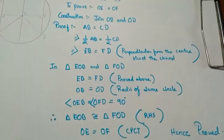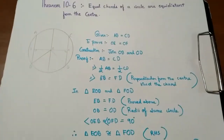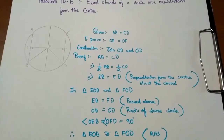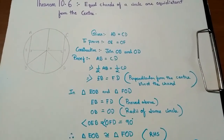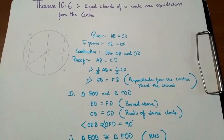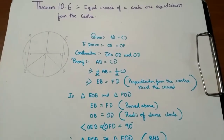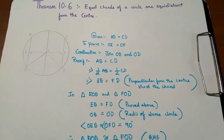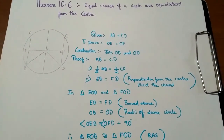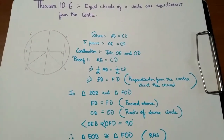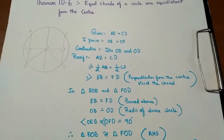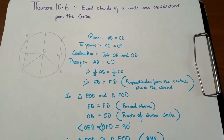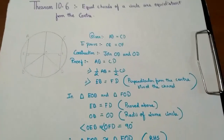So friends, I have proved Theorem 10.6 — equal chords of a circle are equidistant from the center. I hope you understood this theorem properly. Please like, share, and comment on my video, and subscribe to my channel for more content related to mathematics, science, and everything related to your studies. Thanks for watching!